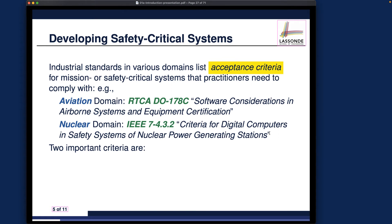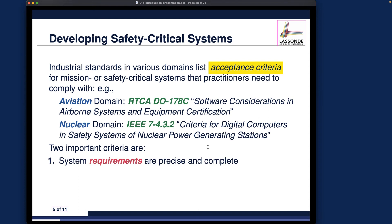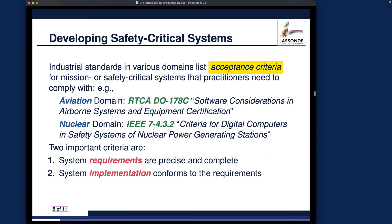Overall, there are two important acceptance criteria across domains. First, the system requirements must be precise and complete — before you build your system, the requirements for its functionality must be clear, precise, and complete with no missing important details. Second, the implementation must conform to the requirements. For example, if the requirement is to sort an array but the implementation simply prints 'hello world,' that clearly does not conform.